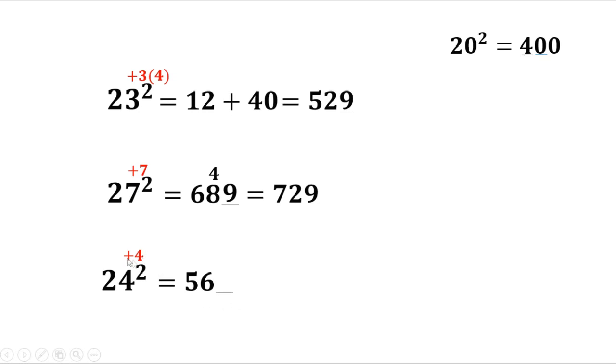Then your last number, the square of 4, is 16. So we have 576. This is how to find the square of numbers between 20 and 30. Thank you.